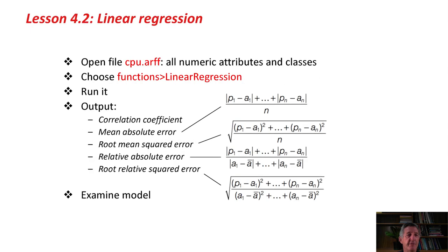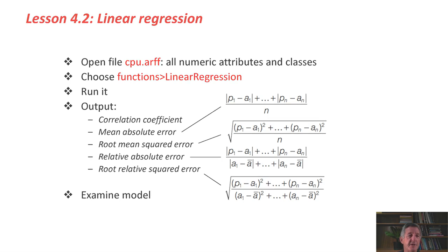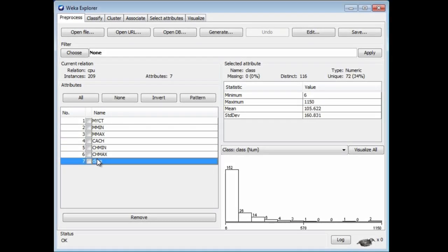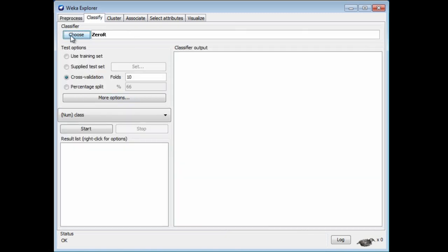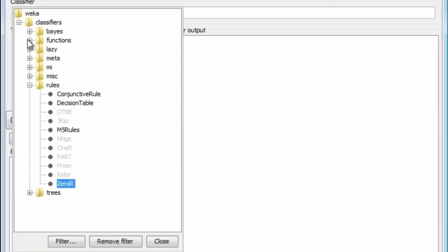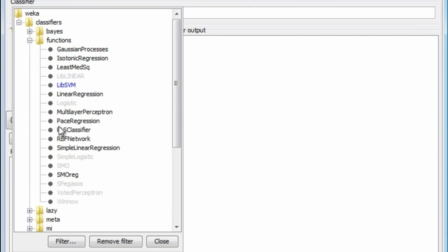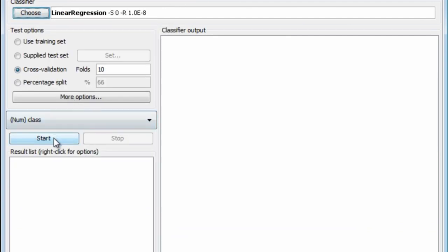Let's do it, then. We're going to open a regression data set. CPU.ARFF. This is a regular kind of data set. It's got numeric attributes. The most important thing here is it's got a numeric class. We're trying to predict a numeric value. We can just go and run linear regression. It's in the functions category, functions linear regression. We just run it.